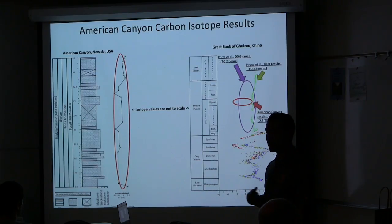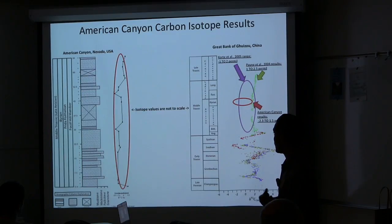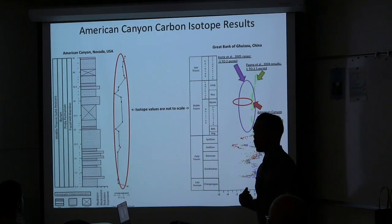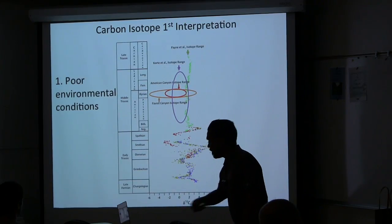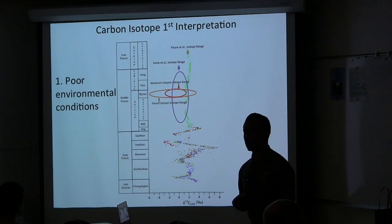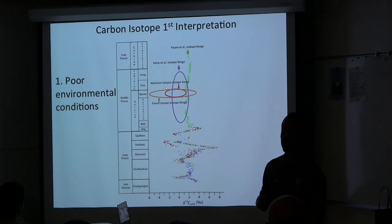American Canyon carbon isotope results vary from negative 2.3 to 1.5 per mil, also varying more than Payne and Cortet. Carbon isotope variation in Fabric and American Canyon relative to Payne and Cortet could mean two things. First, Fabric and American Canyon were affected by poor carbon conditions, and poor environmental conditions could have hindered the Paleozoic to modern fauna transition — an interpretation much different than prior studies which suggest carbon isotopes stabilize in the Middle Triassic.